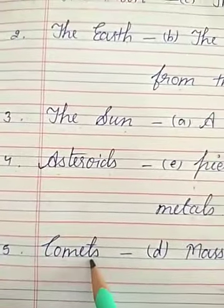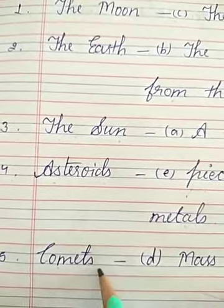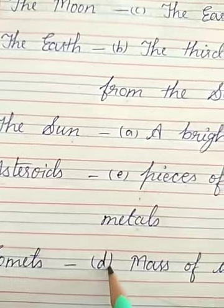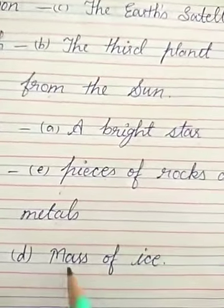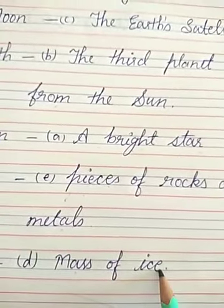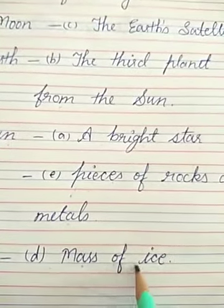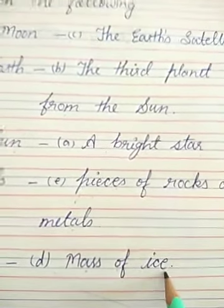Number 5 — Comets. The matching will be Option D — mass of ice. Comets are the mass of ice.